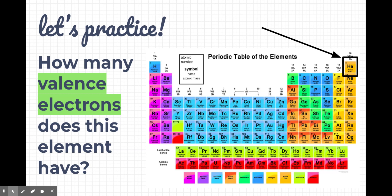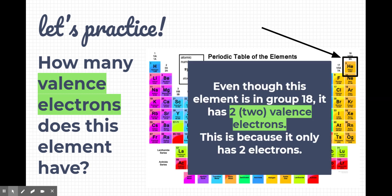What about this one, helium? Even though this element is in group 18, it only has two valence electrons because it only has two electrons to begin with. I wanted to point this one out because it is a special circumstance. However, everything else in group 18 has eight valence electrons, neon, argon, krypton, and it's because it's in group 18.